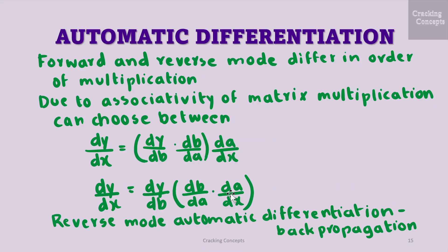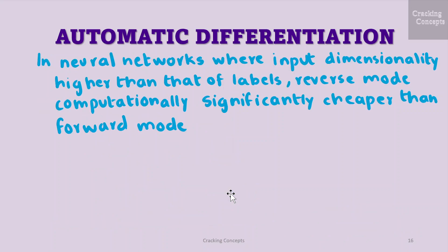In the example we will see in the next slide, we will be focusing on reverse mode automatic differentiation, which is backpropagation. In the context of neural networks where the input dimensionality is often much higher than the dimensionality of the labels, the reverse mode is computationally significantly cheaper than the forward mode.